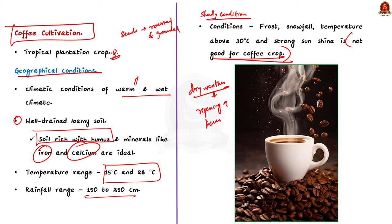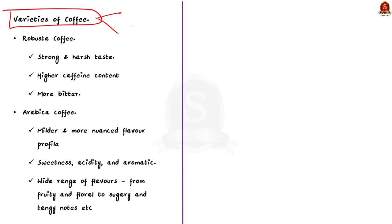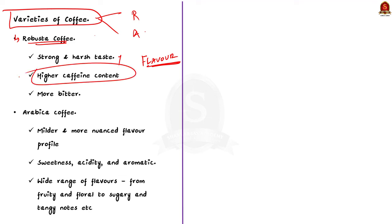There are two important varieties of coffee: Robusta and Arabica. With respect to flavor profile, Robusta is known for a strong and harsh taste, described as grain-like with distinct earthy or woody flavor, with high caffeine content and more bitterness than Arabica. Arabica is known for a milder and more nuanced flavor profile with sweetness, acidity and aroma — offering a wide range of flavors from fruity and flowery to sugary and tangy notes.